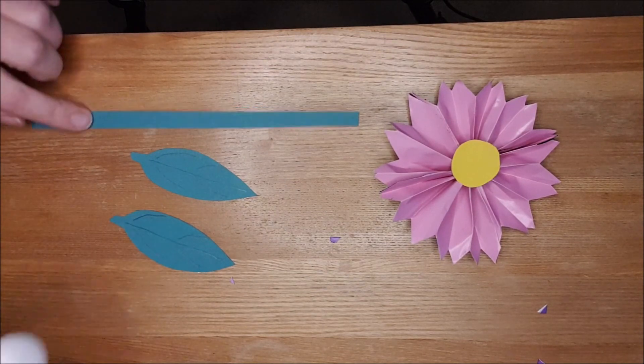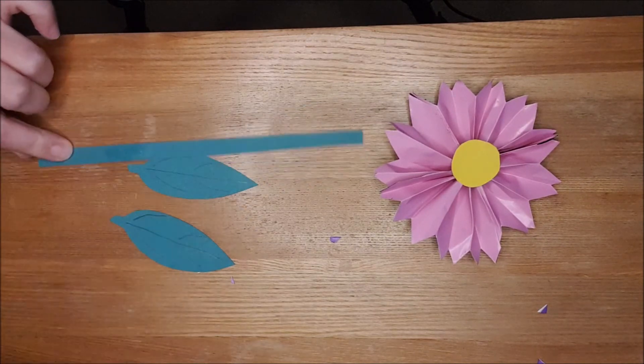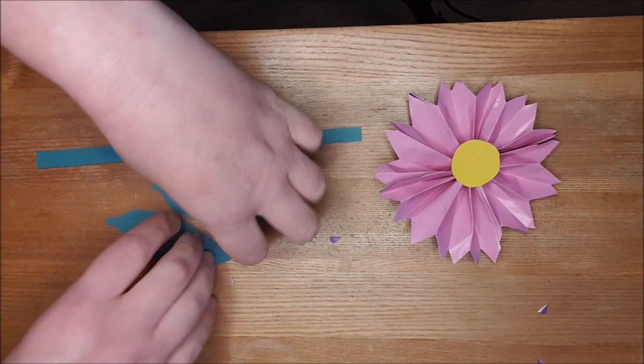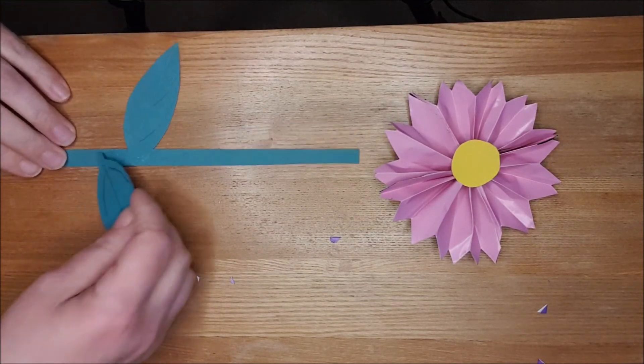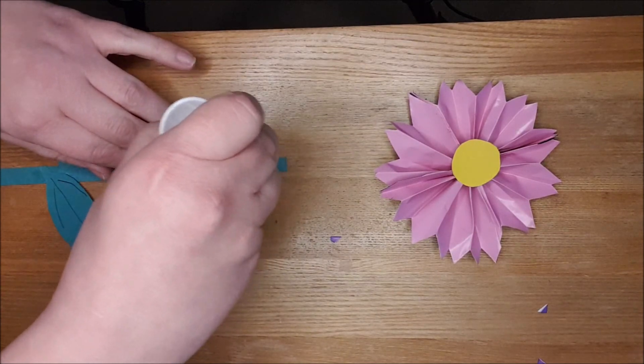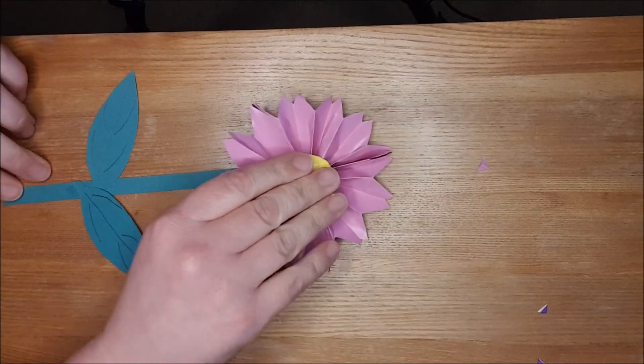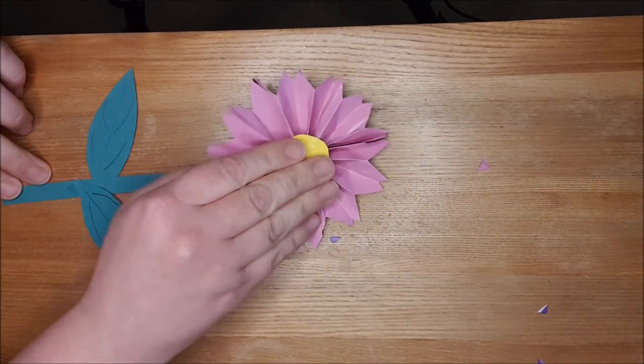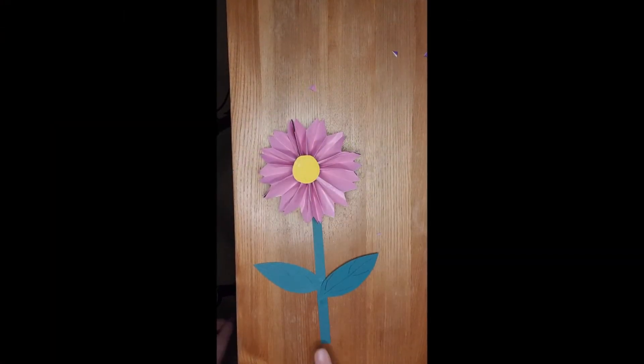So what I'm going to do first is I'm going to glue my leaves on to my stalk, take my two leaves, pop one there, and then one just below it there. And then what I'm going to do is I'm going to glue my flower head to my paper stem there, and there is my paper flower.